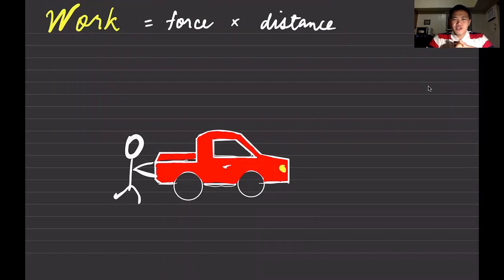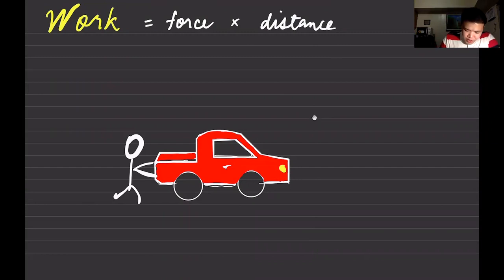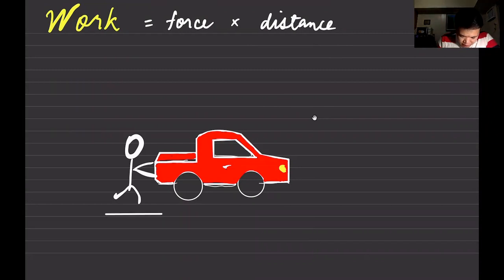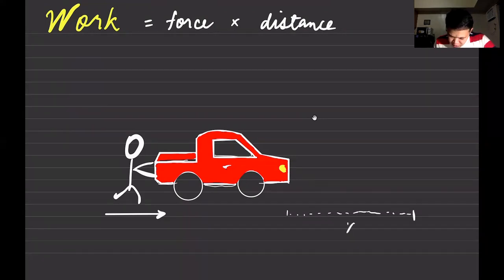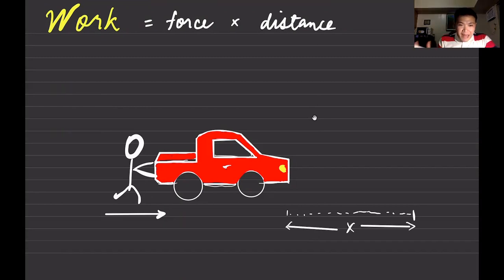In physics, we define work as force times distance. Let's say you are pushing a car — you apply a force to that car, and if you're strong enough, the car moves. It covers some distance x after some time, moving to a new location. So you apply a force and the car covers a distance x.